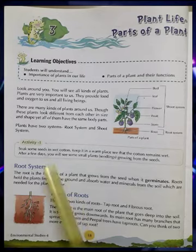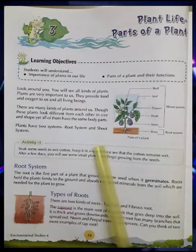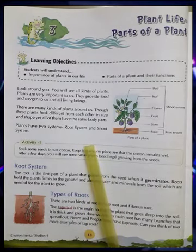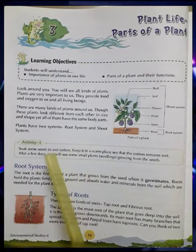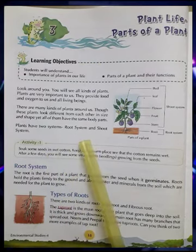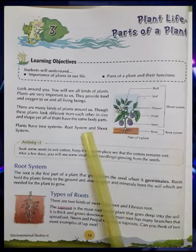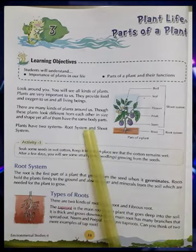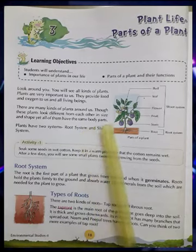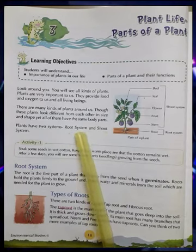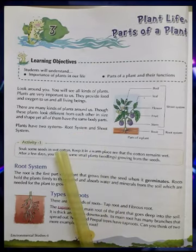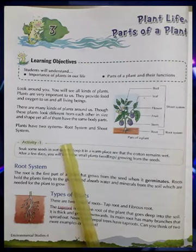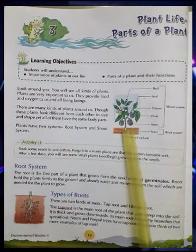You see all kinds of plants around you. Plants are very important to us. They provide us food, shelter, oxygen, and so many things to all living beings. There are many kinds of plants around us. Though these plants look different from each other in size, shape, color, etc., they have the same body parts.